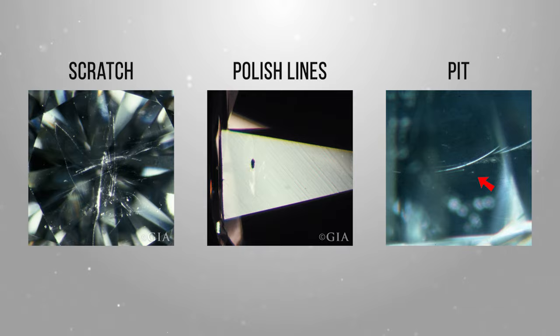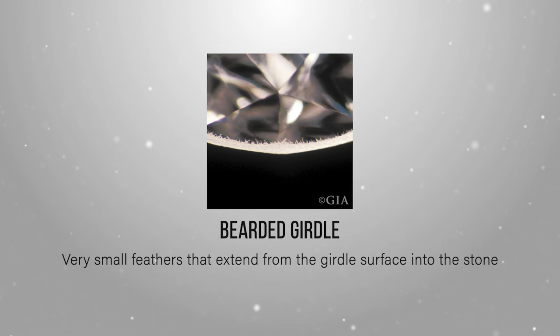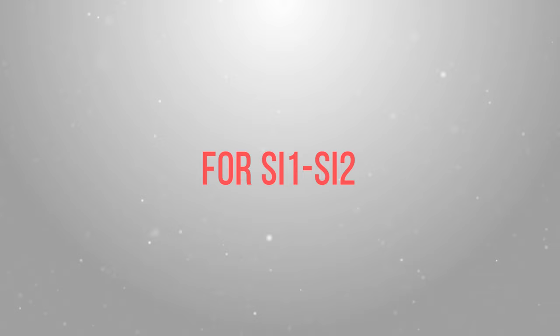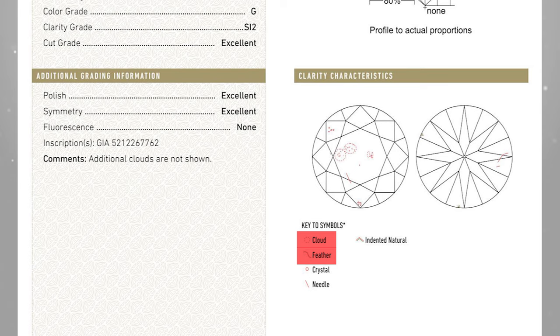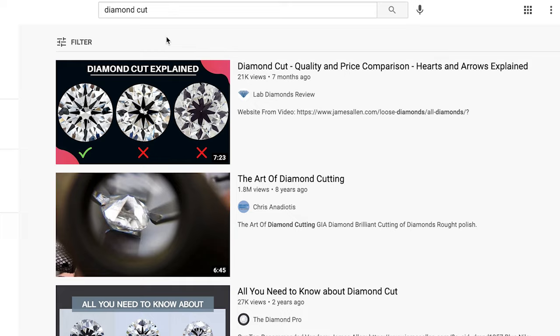Here is when you should have a red alert: the second you see one of the following flaws, just move on to the next diamond. For all diamonds, no matter what clarity grade, you should avoid bearded girdle, bruise, cavity, chip, and indented natural. For SI1 and SI2, you should avoid feather and clouds if it's the first flaw mentioned in the comments. If you haven't watched my other video about diamond cut, make sure to watch it right after this one.